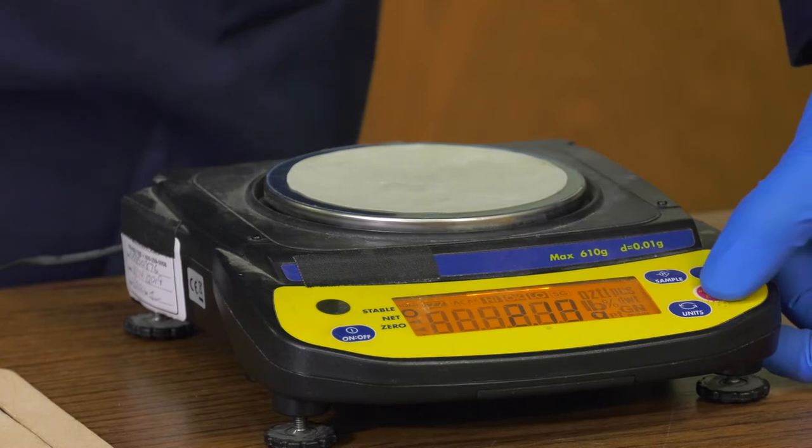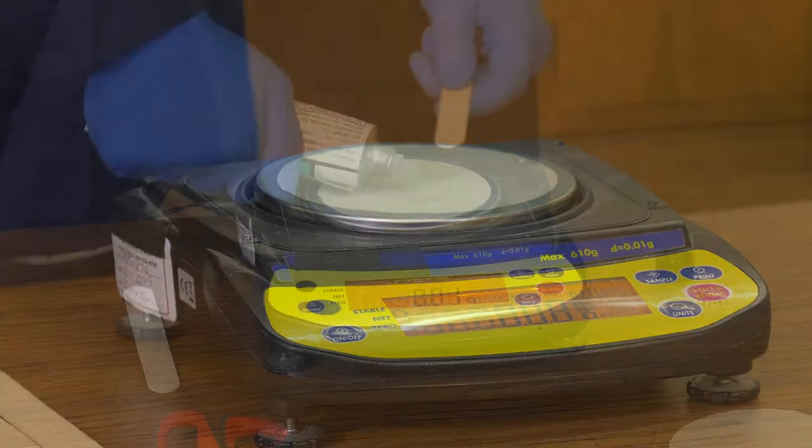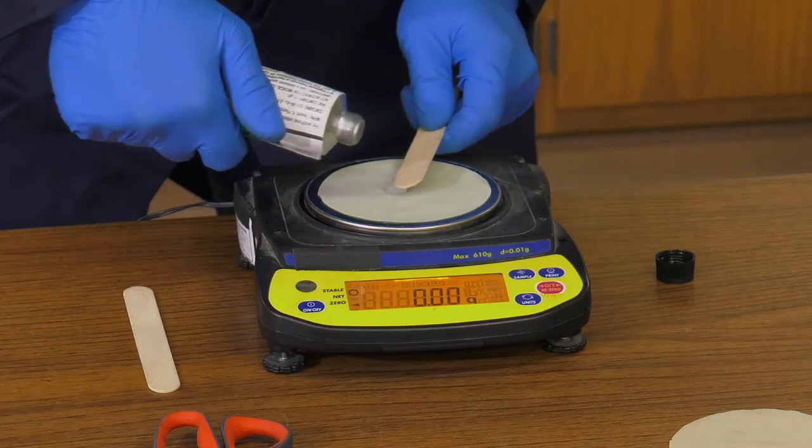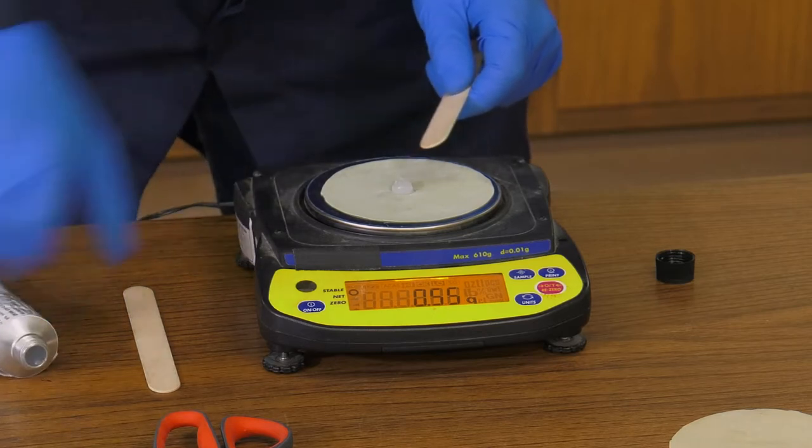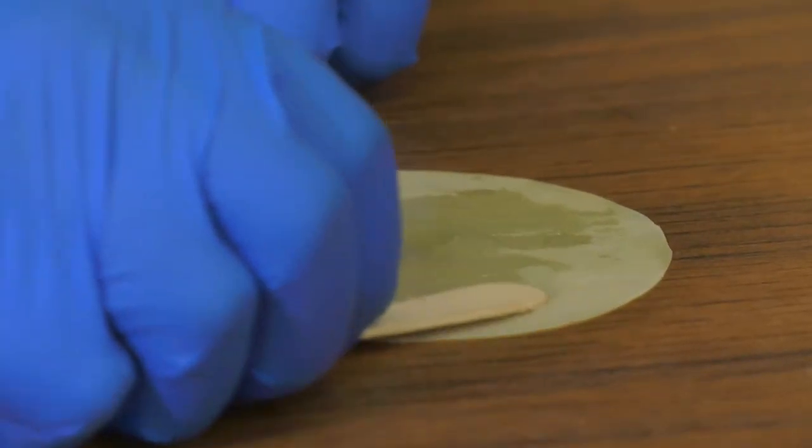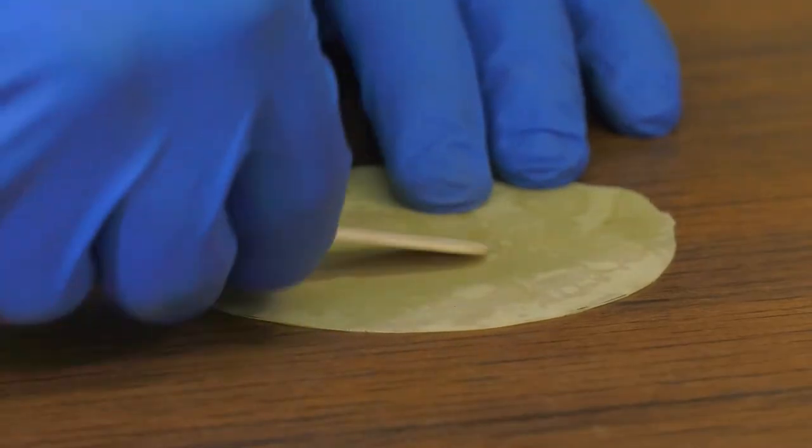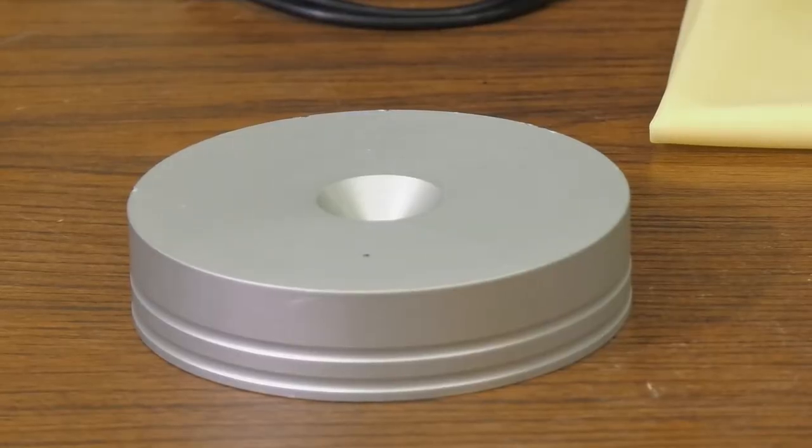First, prepare the end friction reducer using the circular latex membranes. Add approximately 0.25 plus or minus 0.05 grams of silicone grease to one of the latex membranes. Evenly spread the grease around the membrane. Place another circular membrane disk on top and smooth out with a wooden strip. This will be used with the upper platen.